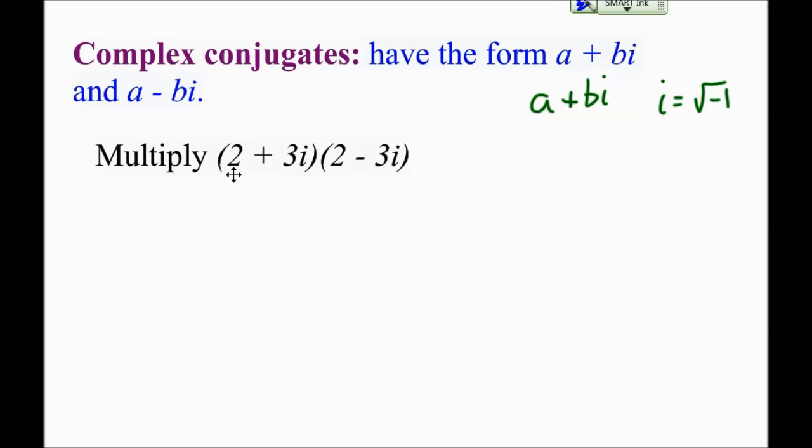So, if I'm looking at this, I've got 2 plus 3i times 2 minus 3i. These are complex conjugates, because the only difference between them is this sign. One is plus 3i, one is minus 3i. That's how I know they're complex conjugates. And what's going to happen is pretty interesting when I multiply them.